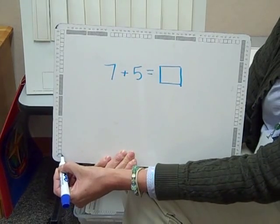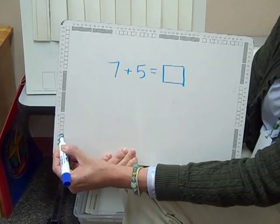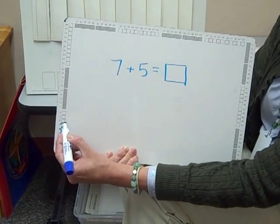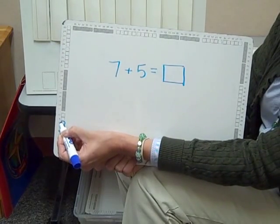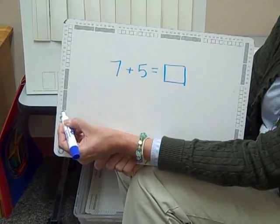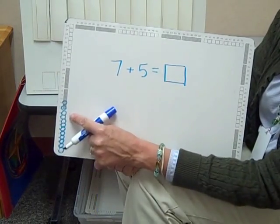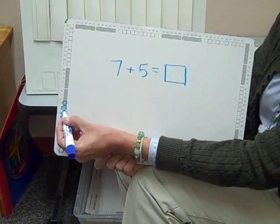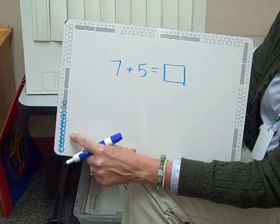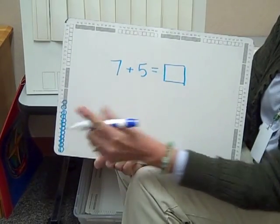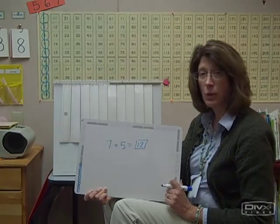A student might start by circling seven ones, and then they would add five more ones. You can see we're using this circle to represent ones. Then they would notice, oh I completed ten, so I'll put a line through it. Now I can tell I have ten plus two, or ten and two ones equals twelve.